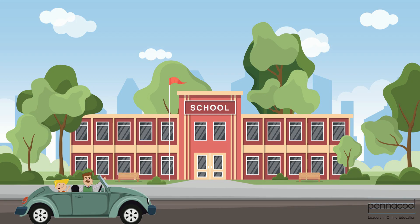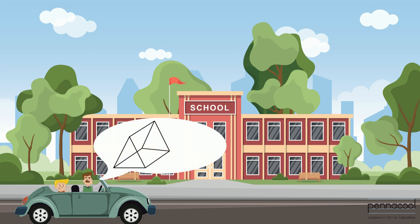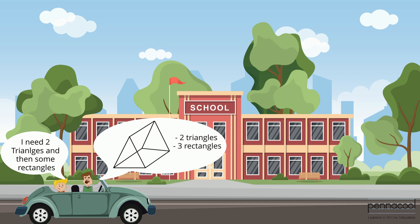As they approach school, Jadon's dad asks one more question — what plane shapes would Jadon need to make the net of a triangular prism, and how many of each shape? Jadon knows he needs two triangles and some rectangles, but isn't sure about the quantity. They arrive at school and his dad tells him he needs three rectangles to connect each pair of triangular sides. His dad wishes him good luck on the test and a great day at school.